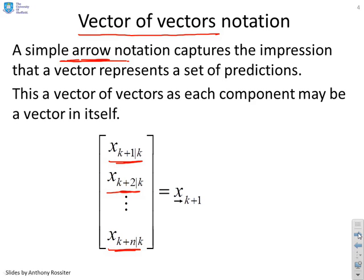So I've written the one step ahead prediction, the two step ahead prediction, all the way down to the n step ahead prediction, and grouped them all into the same vector. And I'm going to write that as x right arrow k plus 1. So the right arrow tells me this is a vector of vectors. I've got all the predictions starting at k plus 1.